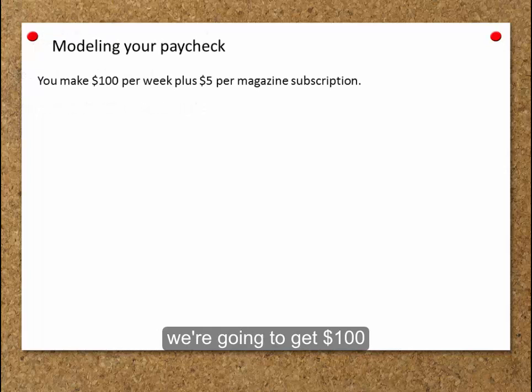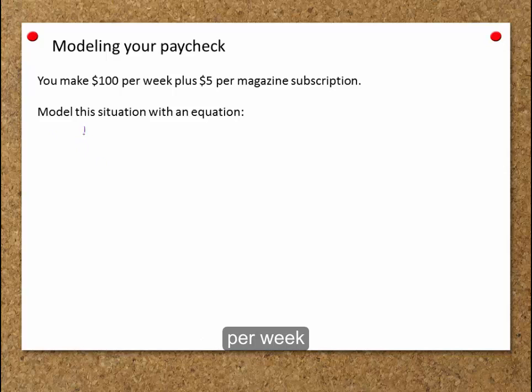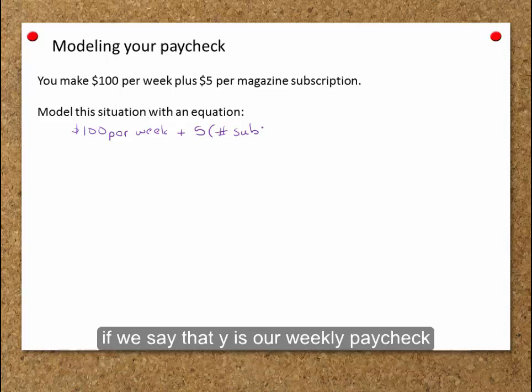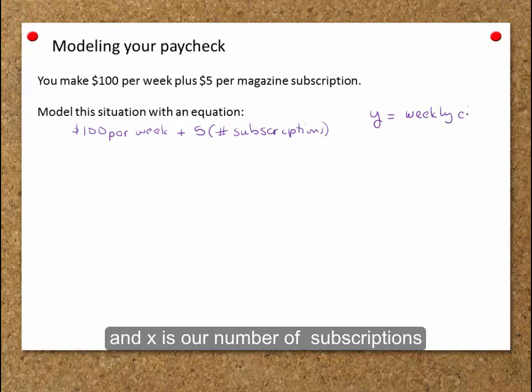We can model with an equation. We're going to get $100 per week plus $5 per magazine subscription, so that's times the number of subscriptions. If we say that y is our weekly paycheck and x is our number of subscriptions,